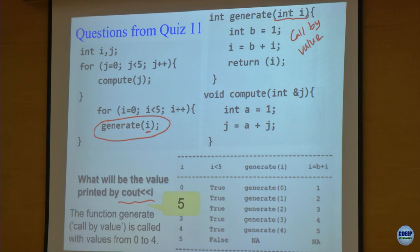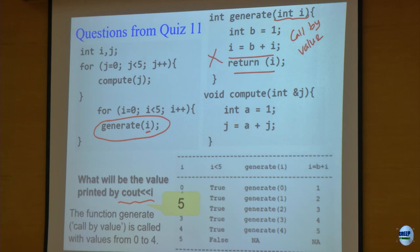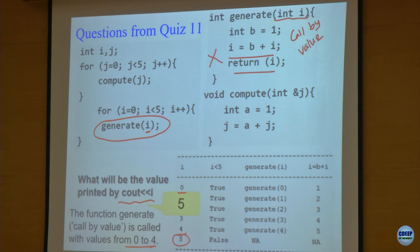As a result, the i sitting inside generate is independent of the i that you pass by invoking generate. So any change that generate makes to i — for example, i equals b plus i return — none of this has anything to do with the value updated here. In the for loop from i equals 0 to 5, values go 0, 1, 2, 3, 4. Called by value, generate does not change the value of i, so when you exit you get the value of 5. The answer is 5.